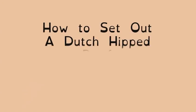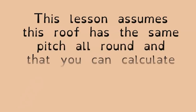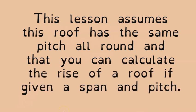This is a short video that goes through the steps required to determine the various members of a Dutch hip roof and how to calculate them before erecting the roof. This animation is designed to give you insight on how to do that. This lesson assumes the roof will have the same pitch all around. If the hip line is drawn on the plan view at 45 degrees, it usually means it is the same pitch all around.